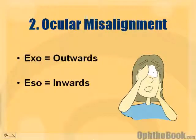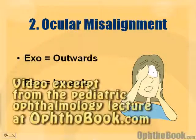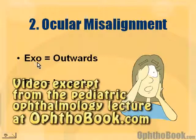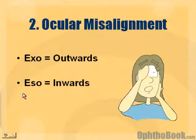Next topic: ocular misalignment. If the eyes aren't aligned properly, you might have an exodeviation — exo means outwards — or an esodeviation, which is inwards. There's also a hyper and a hypo, meaning up and down.